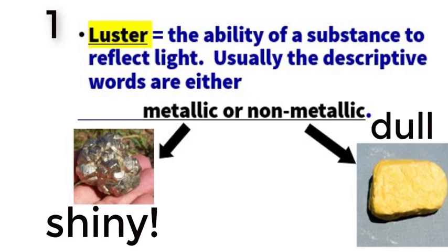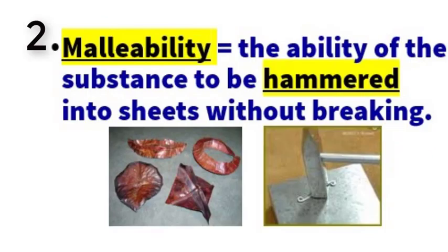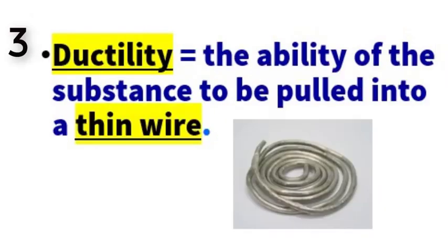The second characteristic is malleability, which is how well you can hammer flat or bend the substance without breaking it. Next is ductility, which is a substance's ability to be pulled into wires.